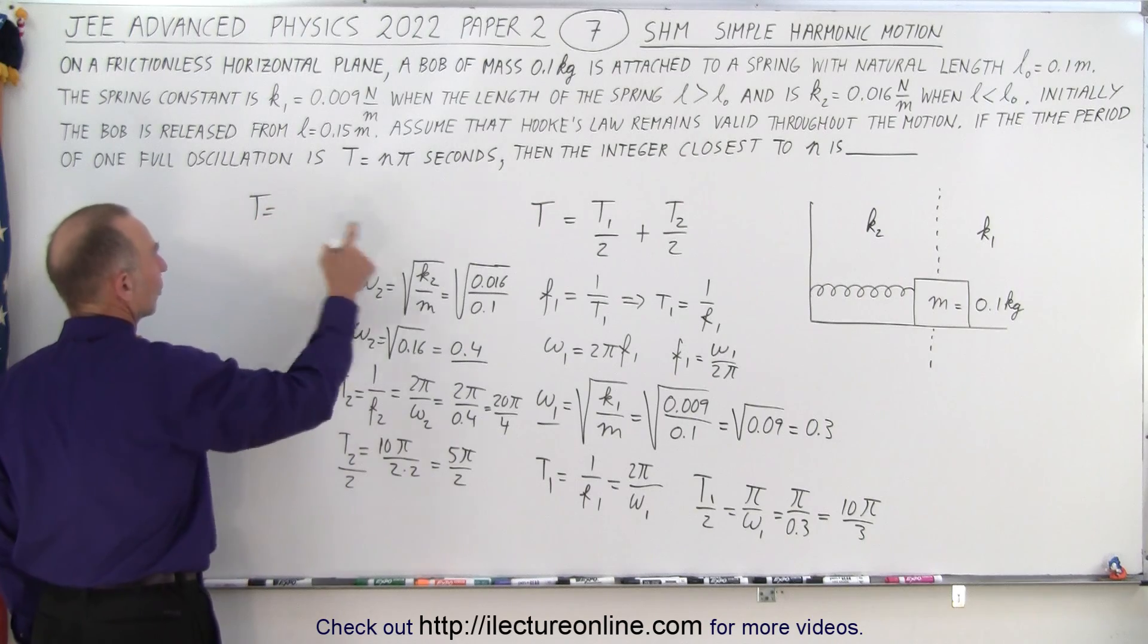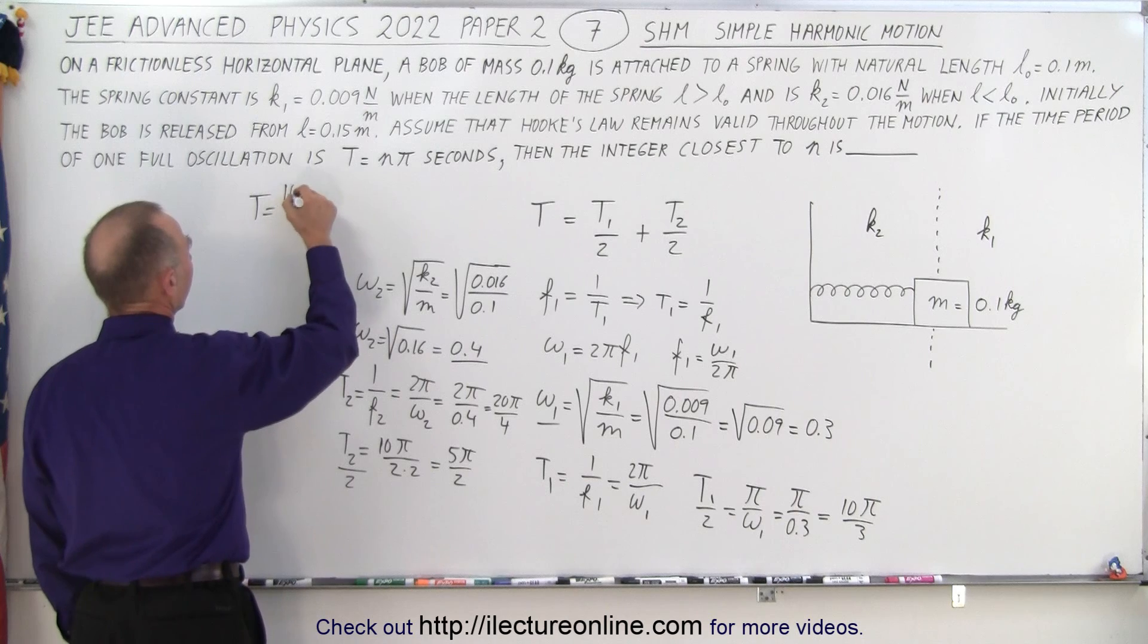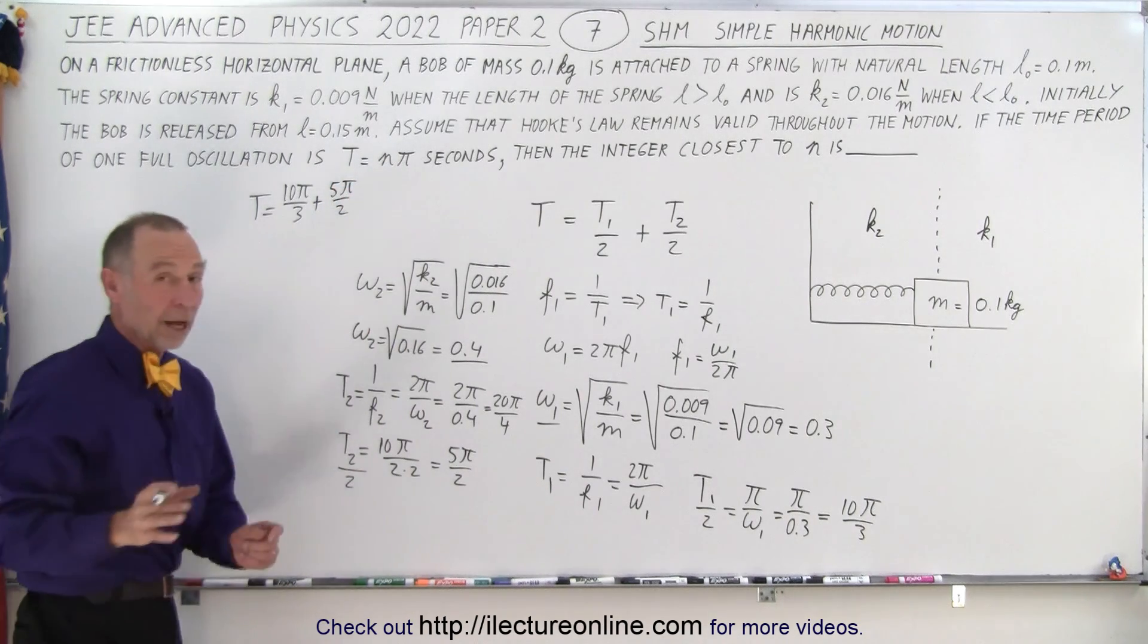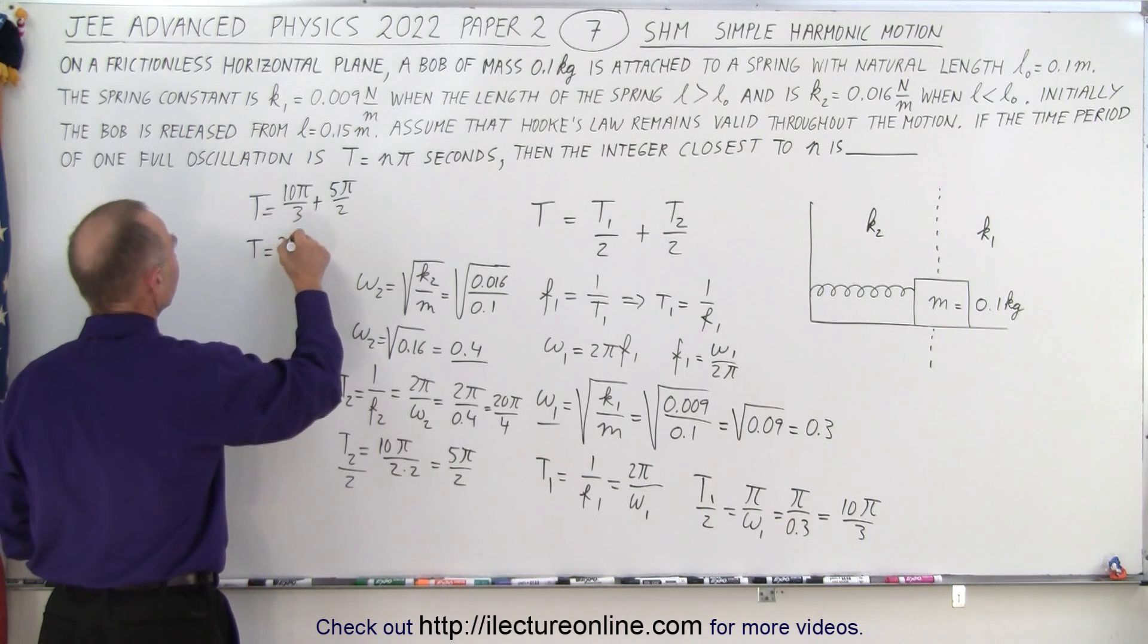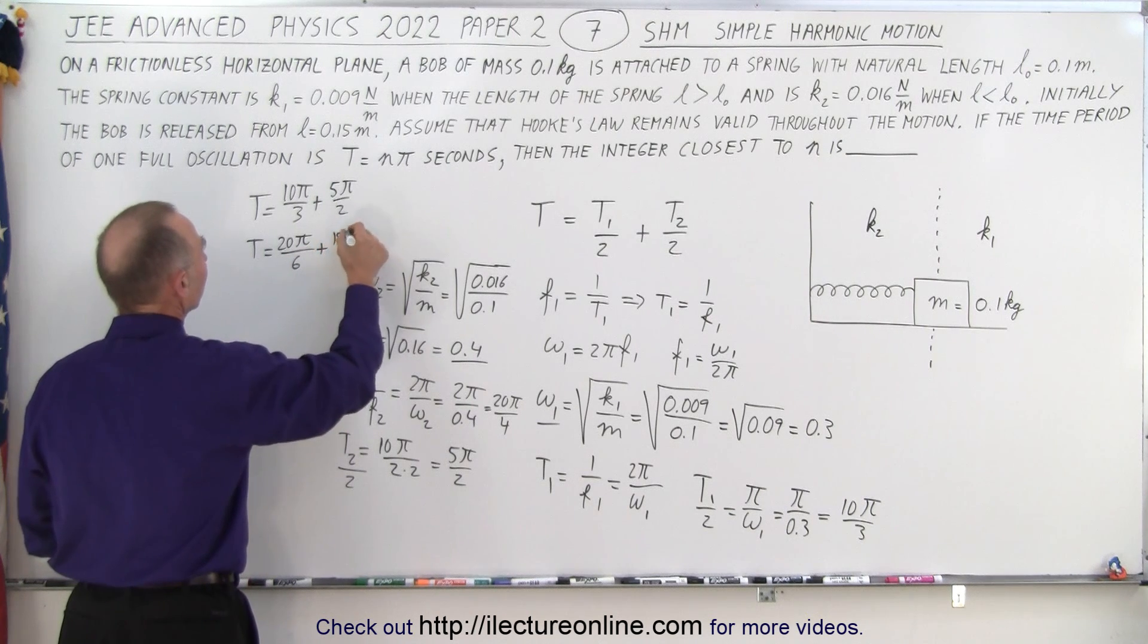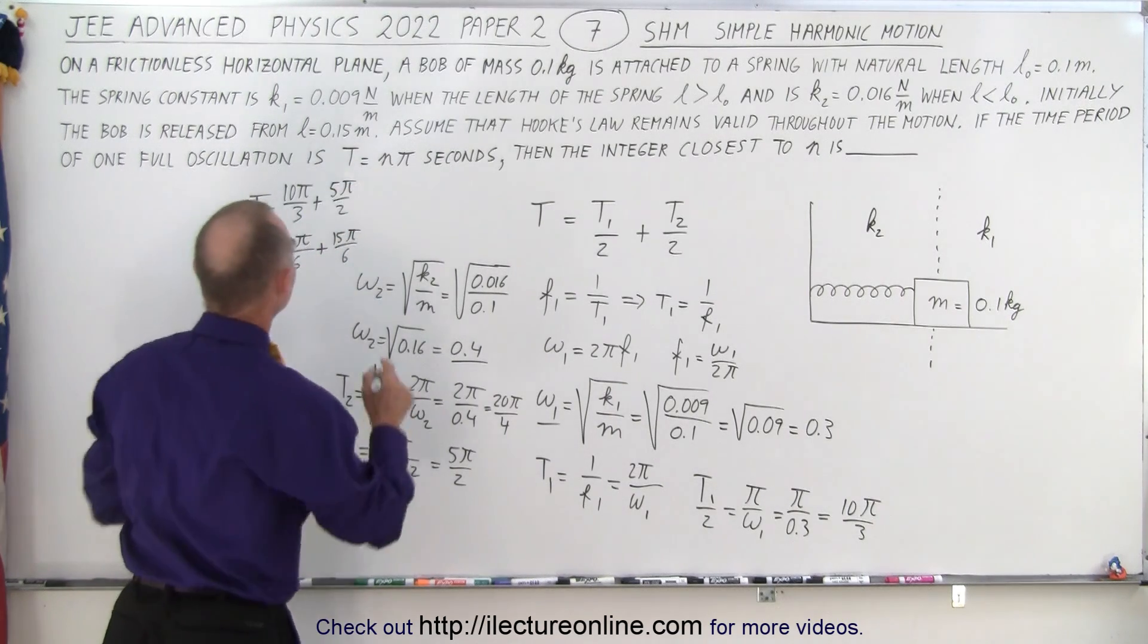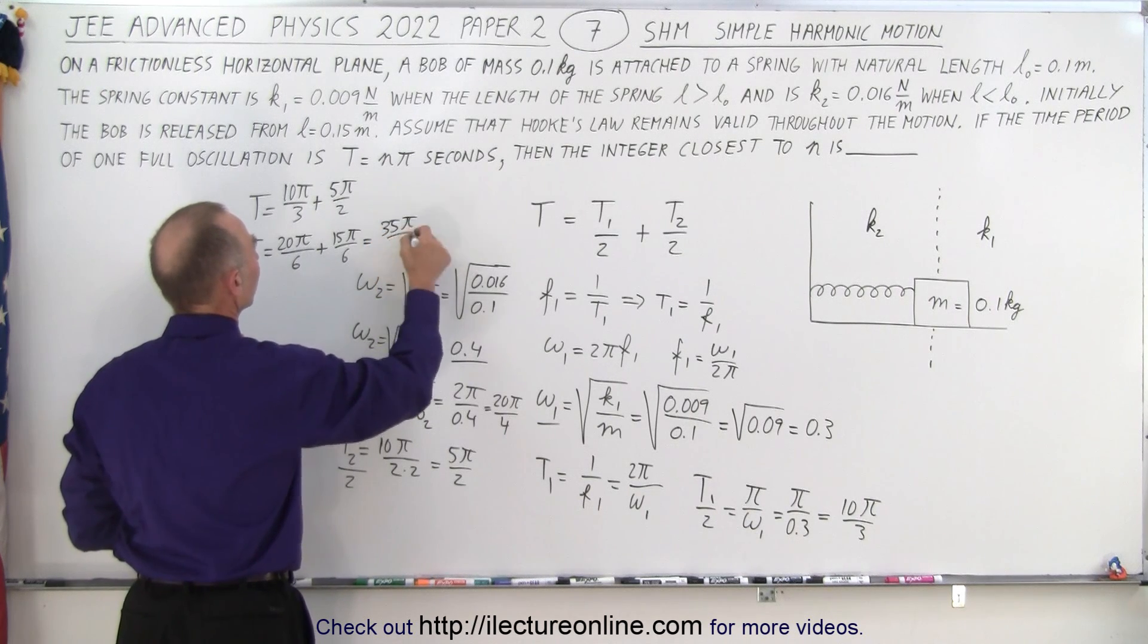So the total period is equal to t1 over 2 which is 10 pi over 3 plus t2 over 2 which is 5 pi over 2. And now of course the common denominator would be 6. So then we have t is equal to 20 pi divided by 6 plus 15 pi divided by 6. We have n pi right here.